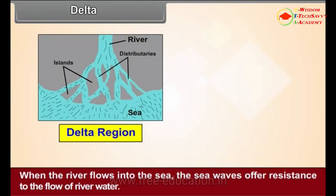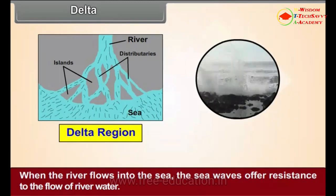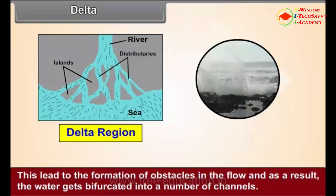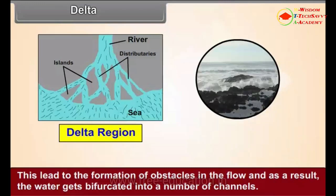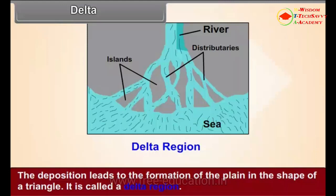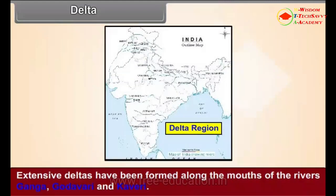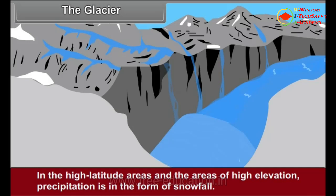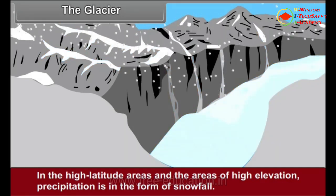Delta: When the river flows into the sea, the sea waves offer resistance to the flow of river water. As a result, the load brought by the river gets deposited at the mouth of the river, leading to the formation of obstacles in the flow. The water gets bifurcated into a number of channels called distributaries. The deposition leads to the formation of a plain in the shape of a triangle called a delta region. Extensive deltas have been formed along the mouths of the rivers Ganga, Godavari and Kaveri.